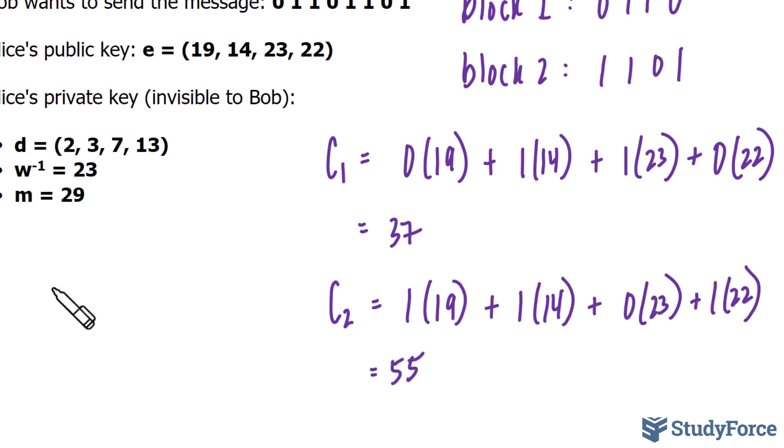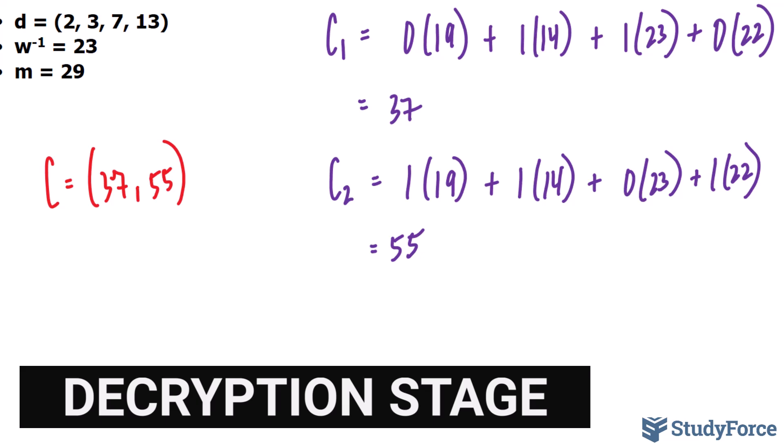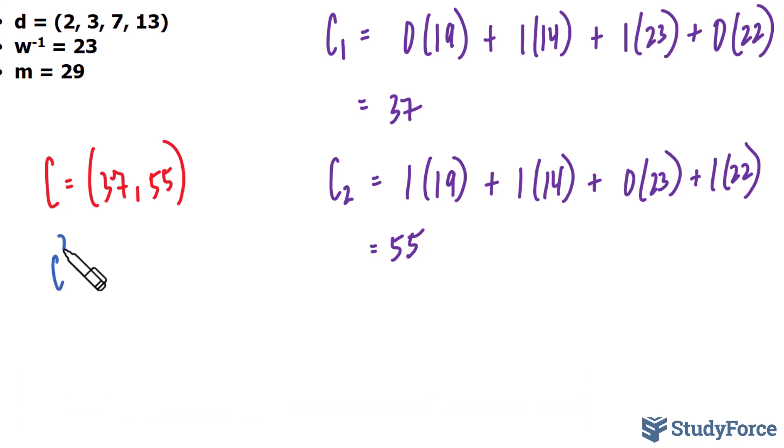We say our ciphertext consists of 37 and 55. The ciphertext you see in red is the encrypted message. If someone were to try to intercept this, they would have no idea what message Bob is trying to send to Alice. Once Alice receives this encrypted ciphertext from Bob, she needs to decrypt it back. We'll call the decrypted version C'.